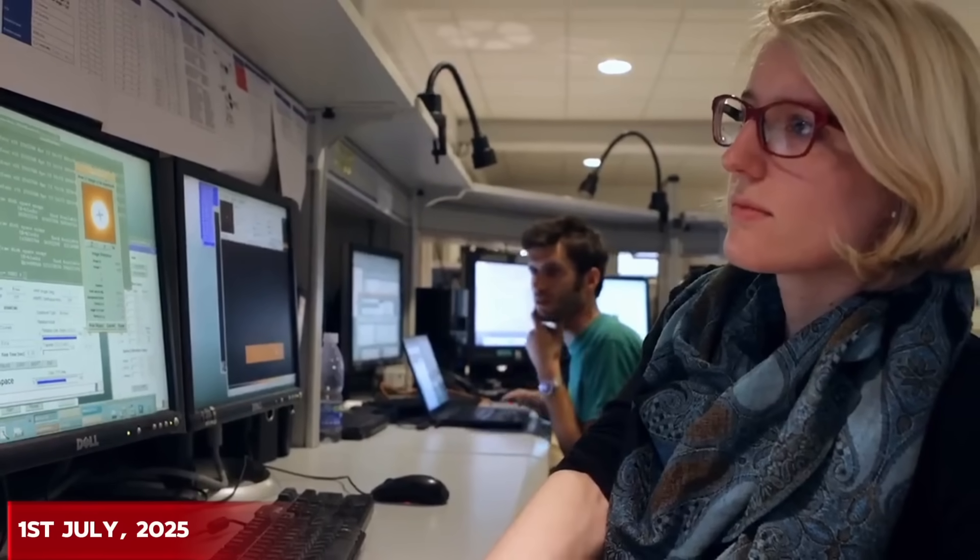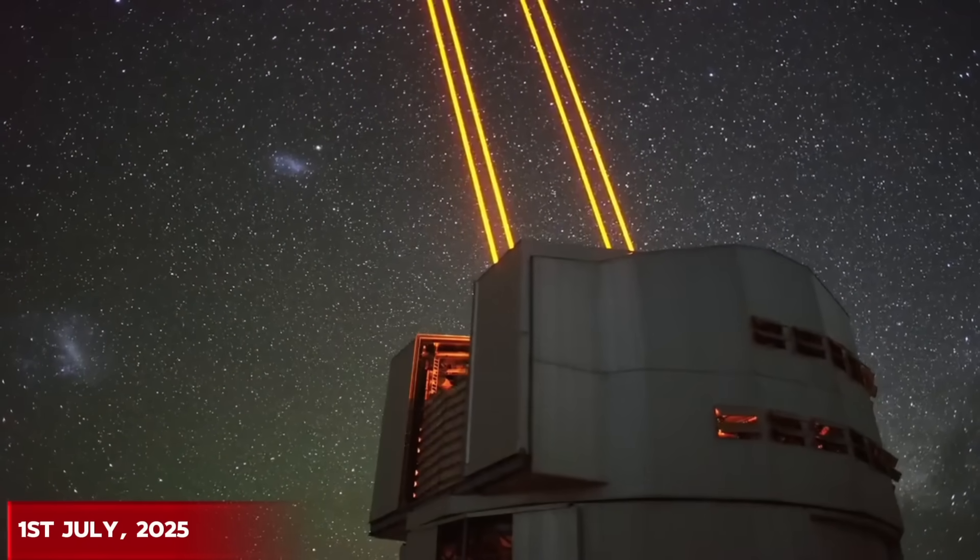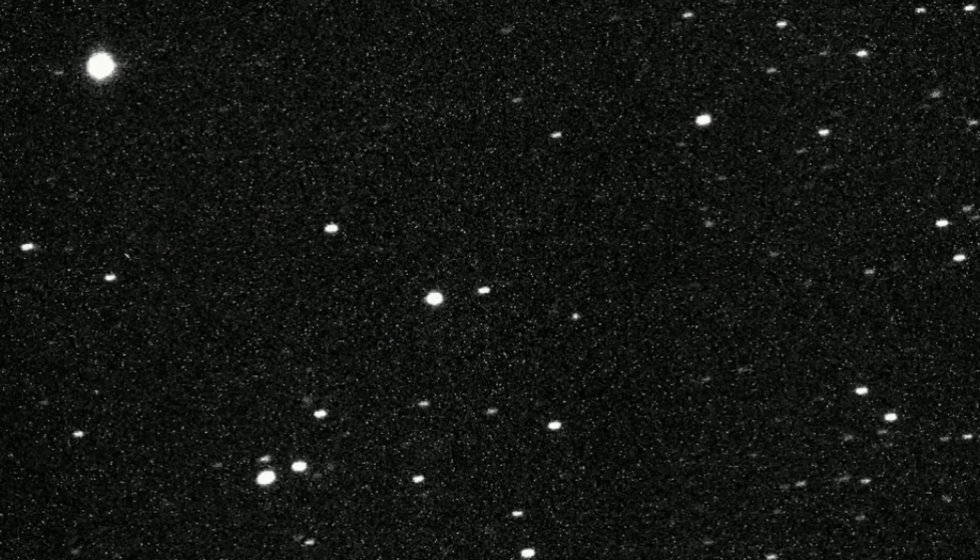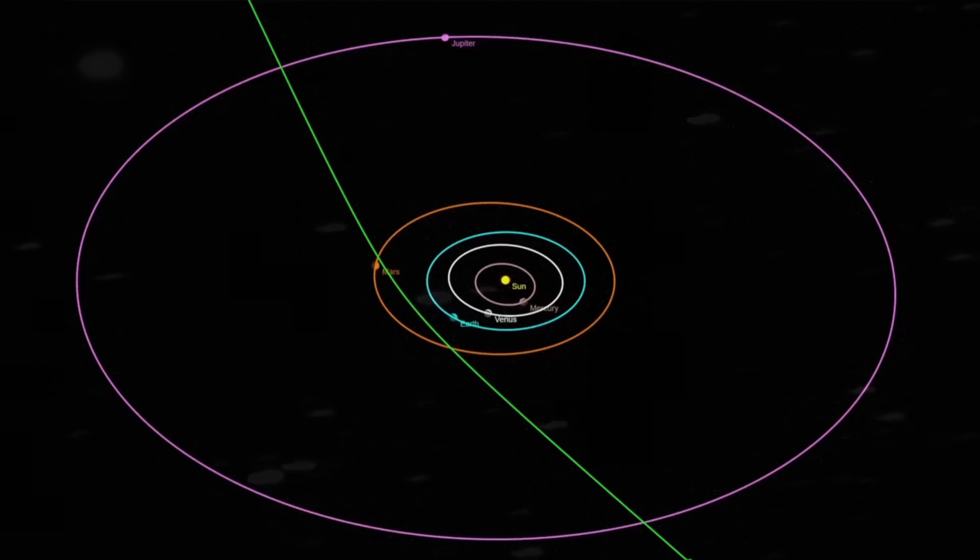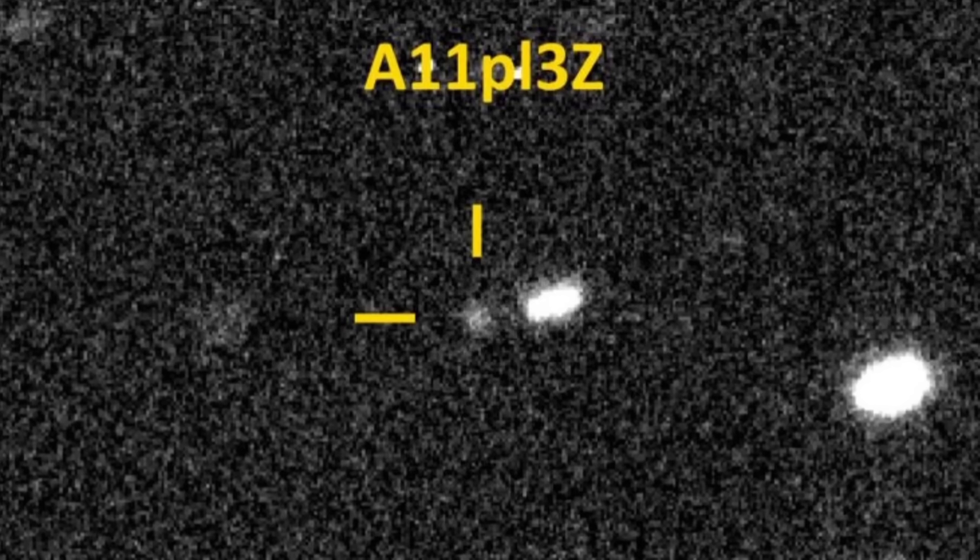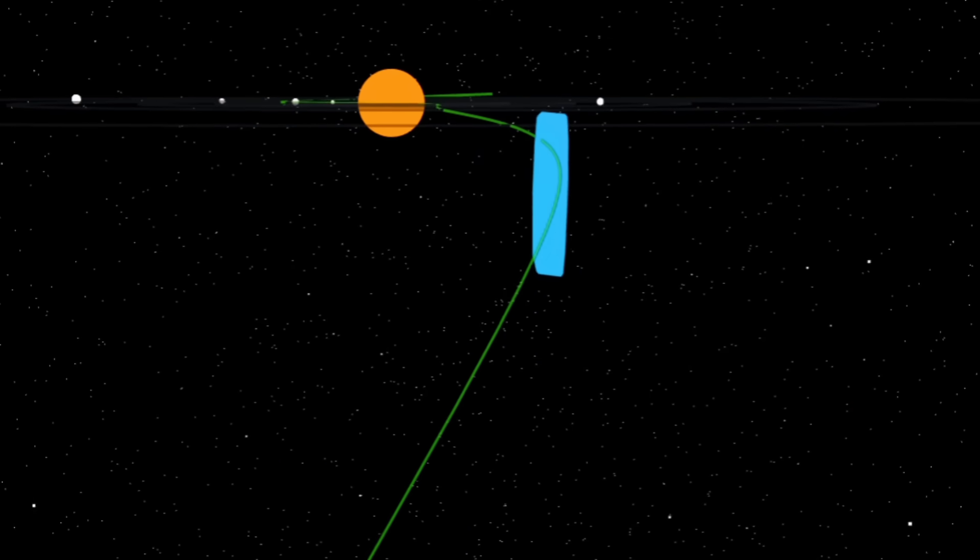On Tuesday, astronomers using a telescope in Chile spotted something strange in the sky. It looked like an unknown asteroid moving on a very unusual path, possibly coming close to Earth's orbit. At first, they called it a11PL3Z. But soon, things got more interesting.